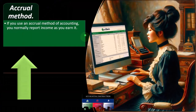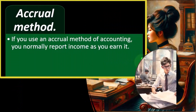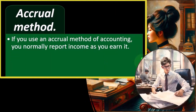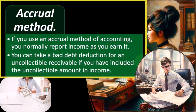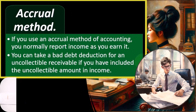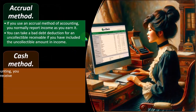Accrual method: if you use an accrual method of accounting, you normally report income as you earn it. If you have to track accounts receivable for a small business and you're using accounting software, then most likely the system is going to be recording revenue on an accrual-based system — that's just going to be the default. So you can take a bad debt deduction for an uncollectable receivable if you have included the uncollectable amount in income, which typically will be the case because you recorded it in income when accounts receivable went up when you invoiced the client.